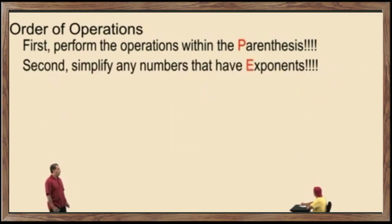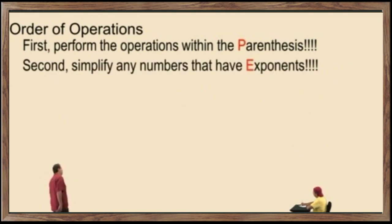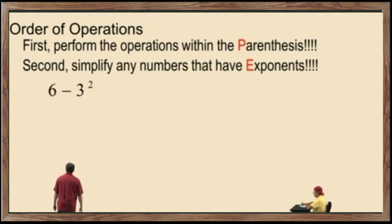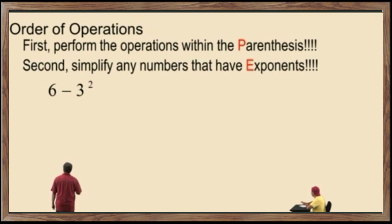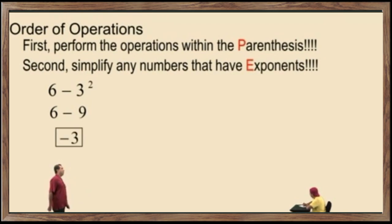Our second category in order of operations is to simplify any numbers that have exponents. Here we have 6 subtract 3 squared. We have to simplify the exponent part: 3 squared is 3 times 3, which is 9. We bring down our work. 6 subtract 9 is negative 3.